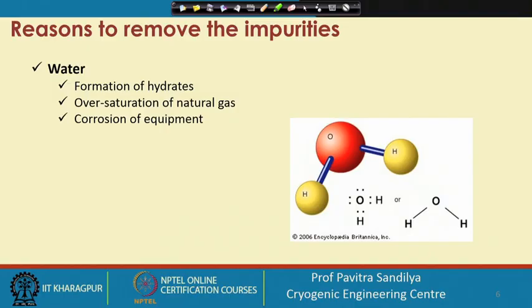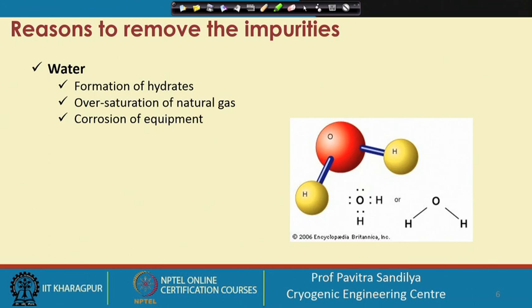Secondly, the presence of water will cause oversaturation of natural gas, leading to precipitation of some components in the pipelines or equipment. Thirdly, because natural gas has many acid gases like H2S and CO2, these react with water to form weak acids like carbonic acid and sulfurous acid, causing corrosion to pipelines and equipment. That is why water needs to be removed.